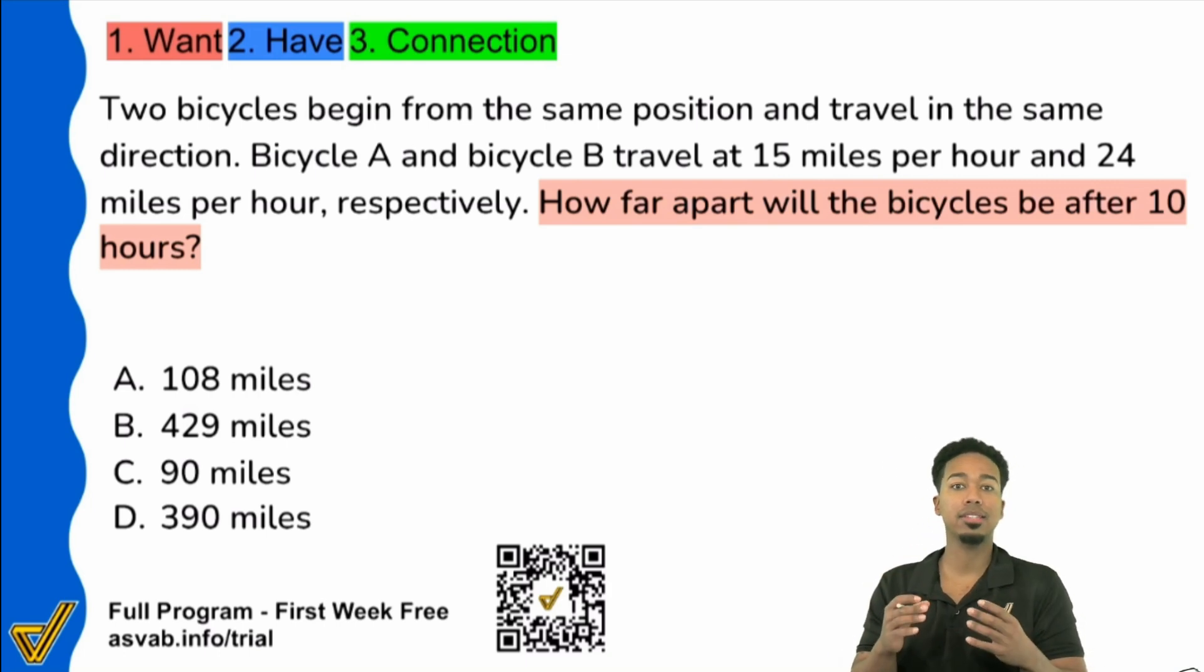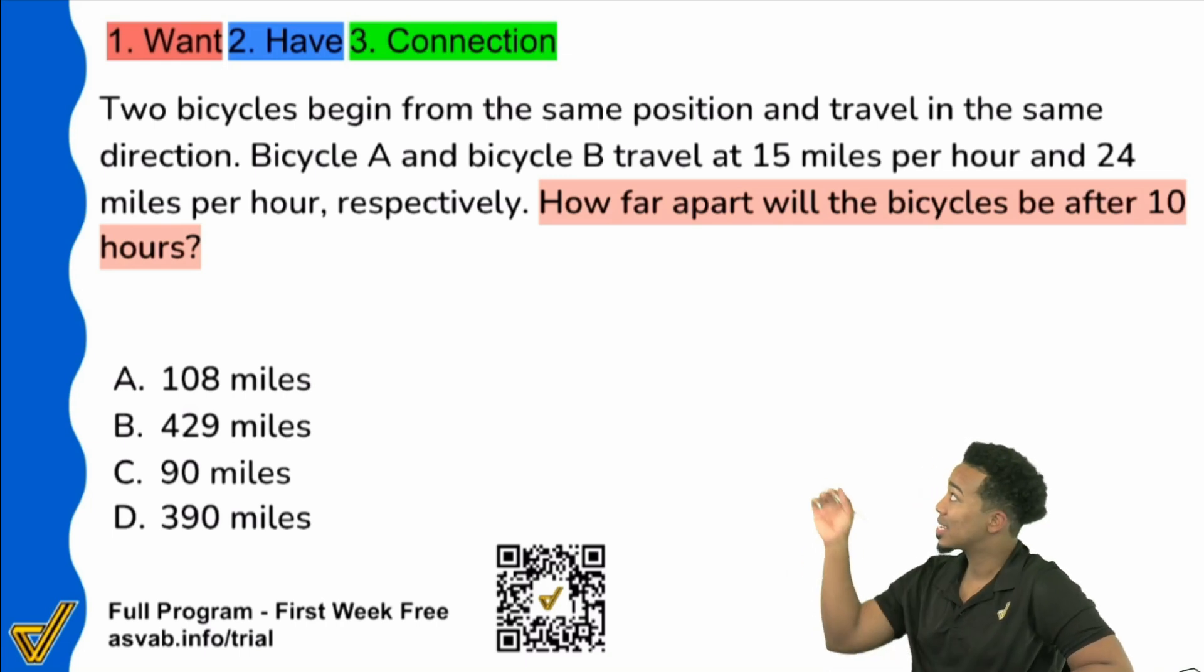So what you might want to notice here is that this is really hinting at a distance rate time problem. I haven't even read the entire question yet or all the information, but the question always gives a little bit of a hint sometimes. So with that said, I'm looking at that and it says again, how far apart. So that's signifying some sort of distance, how far, right? So I can tell you right now how far apart means we're looking for a distance.